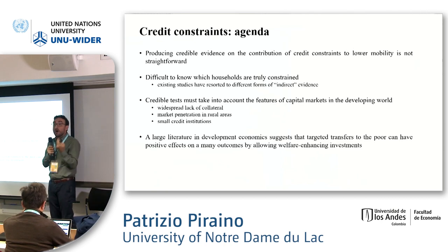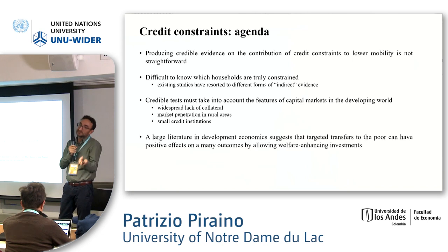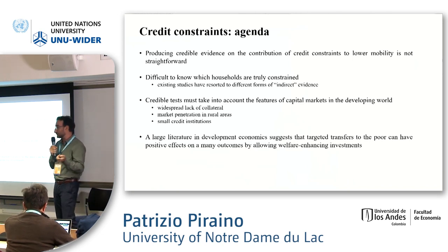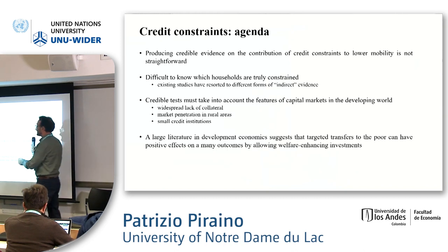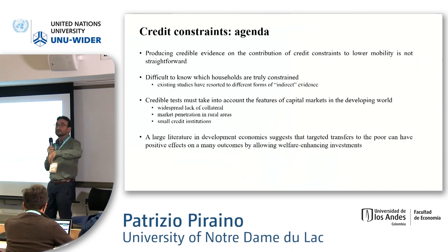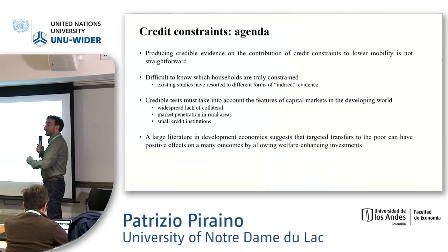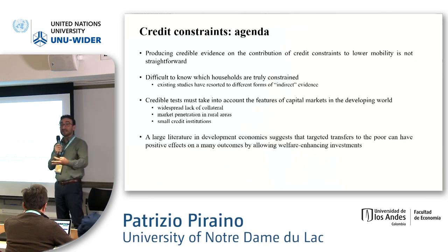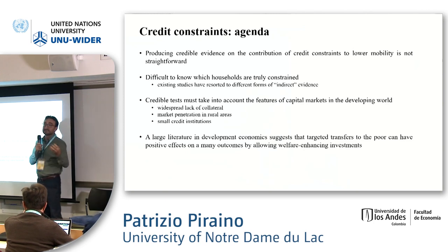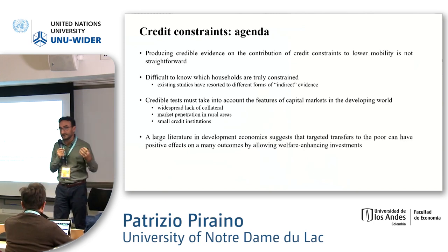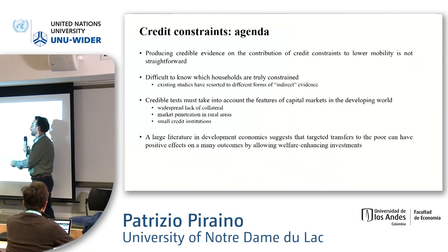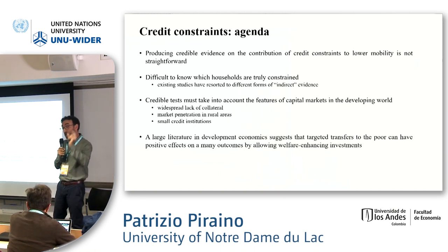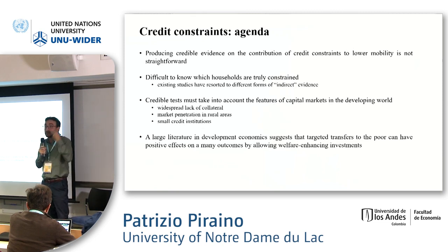Empirically, it's hard to measure how important credit constraints are because you need to define who is credit-constrained. Whatever test we come up with should account for what is more widespread in developing countries — for instance, many more families don't have collateral to access credit. In some places, market penetration in rural areas is not very deep, which explains the success of things like M-Pesa in Kenya, where you bypass the banking sector by doing it by phone. The large number of small institutions are also characteristics of the low-income world that might change our definition of credit constraints.